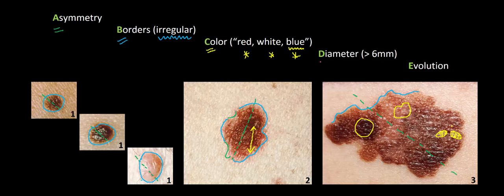D stands for diameter. The bigger the lesion, the more worrisome it is. The established size cut-off is that lesions greater than six millimeters deserve a second look, based on studies showing an acceptable level of sensitivity and specificity for the diagnosis of melanoma. Six millimeters is about the size of the eraser head on a pencil, so if you see pigmented lesions larger than that, it merits a closer look.